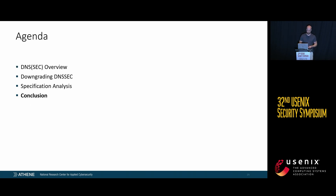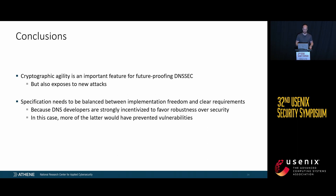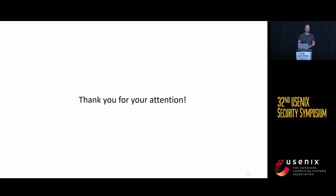In conclusion, cryptographic agility is an important feature for future-proofing DNSSEC, but as we've seen, it also exposes it to new attacks. Specification generally needs to be balanced between implementation freedom and clear requirements — especially in DNS, where developers are strongly incentivized to favor robustness over security. In this case, stricter specification would certainly have prevented these vulnerabilities. Thank you for your attention.